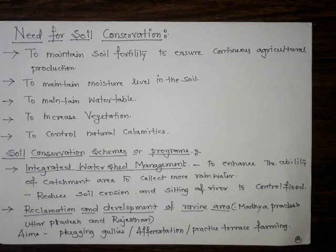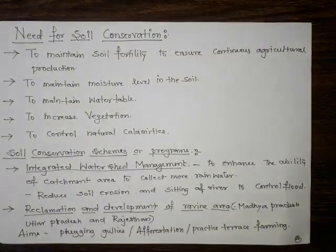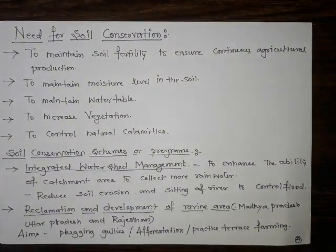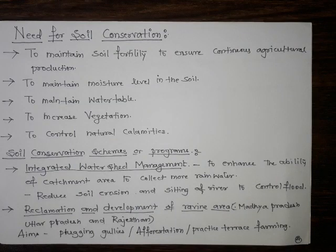Plugging of gullies can also be a very effective method of soil conservation. The key methods of soil conservation to remember are: plugging gullies, construction of dams, strip cropping, and agroforestry — that is, growing trees along with crops — as effective methods to conserve soil.